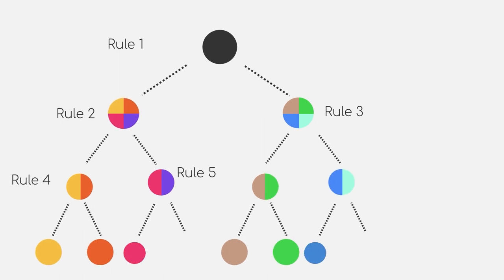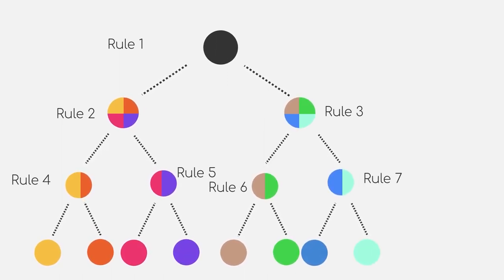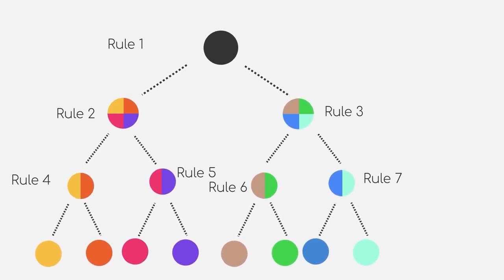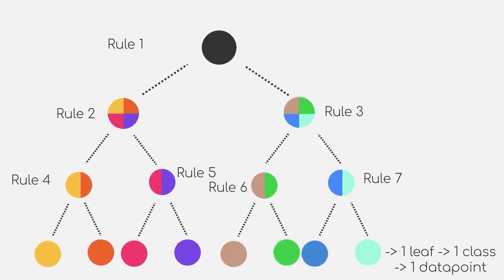I can just keep splitting until I have a decision tree that perfectly predicts my training dataset. Well, this is indeed very true if you keep adding rules and expanding a tree until every leaf contains a single class. In the worst case, we can add as many rules such that each leaf only contains one data point, in which case we will always be 100% accurate for our training data.